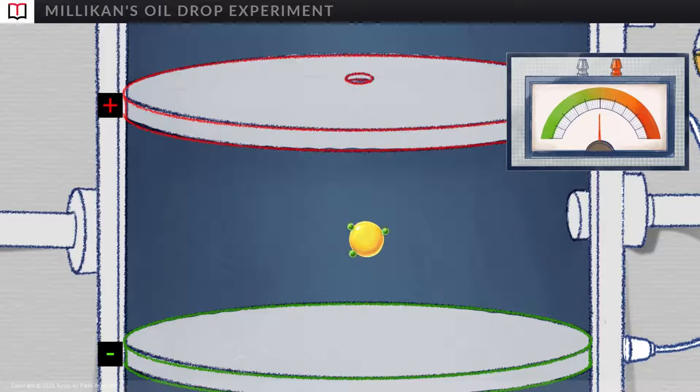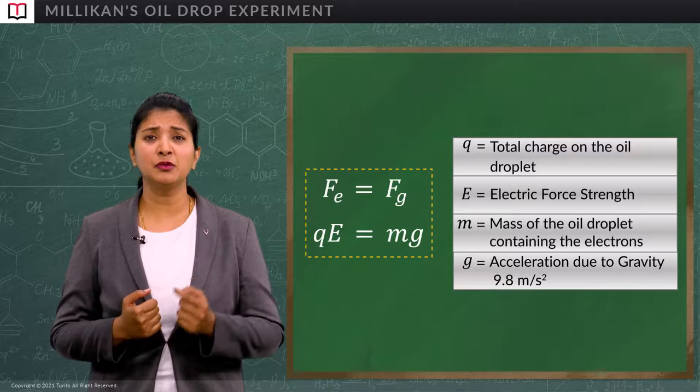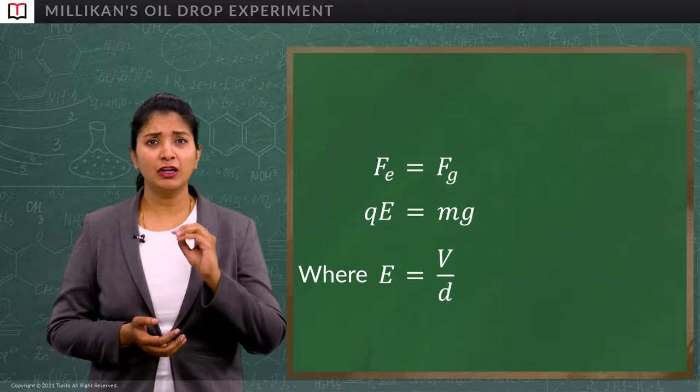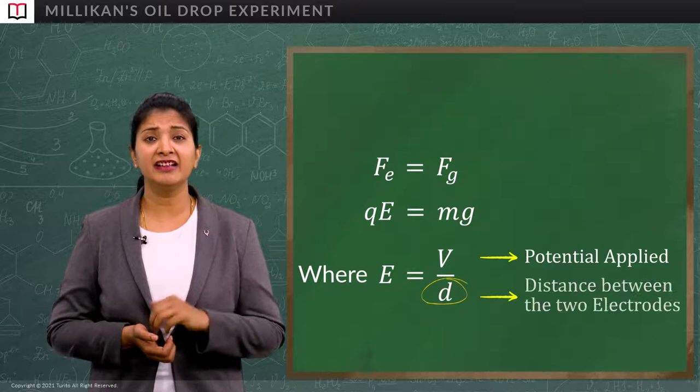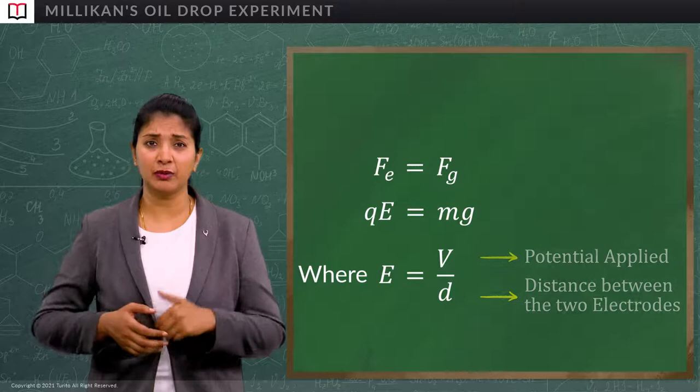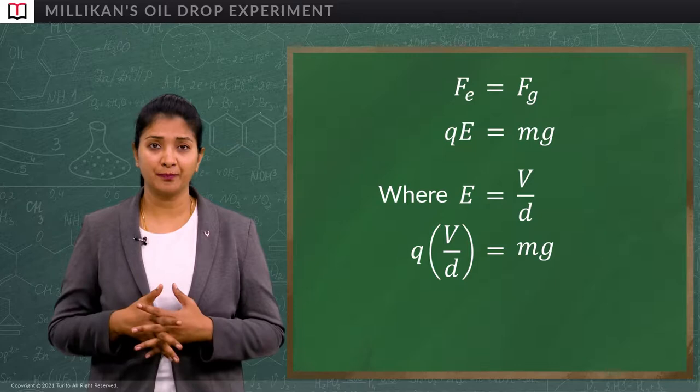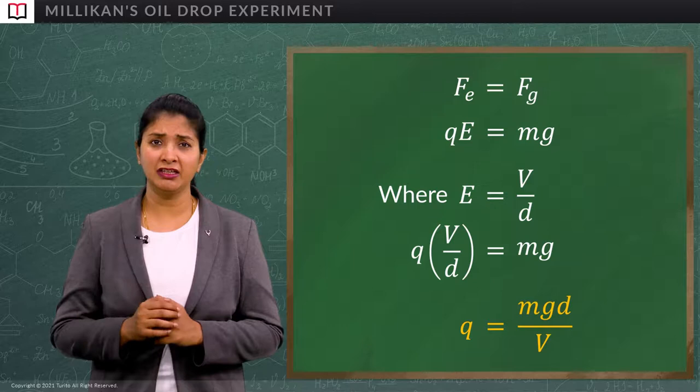Now, this droplet is suspended between the two plates implies the two forces are balanced out. What are these two forces? The electric force and the force of gravity. Now, we can write this as F_E is equal to F_G. We already know that E is equal to V by D, where V is the potential applied and D is the distance between two electrodes. Let us keep this E value in the equation. We will get Q into V by D is equal to MG. Ultimately, we will get Q equals M into G into D divided by V.